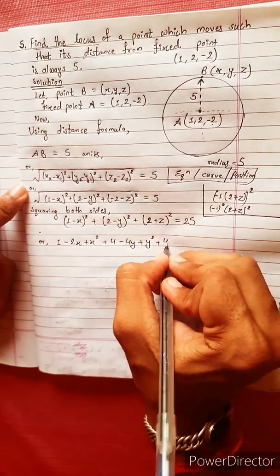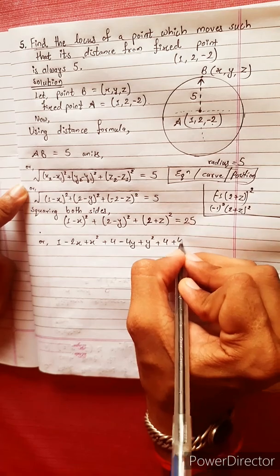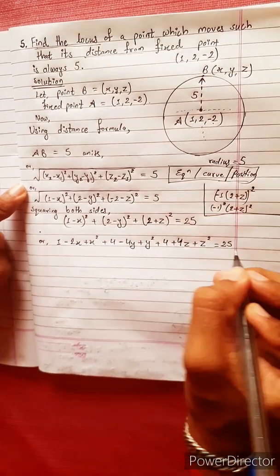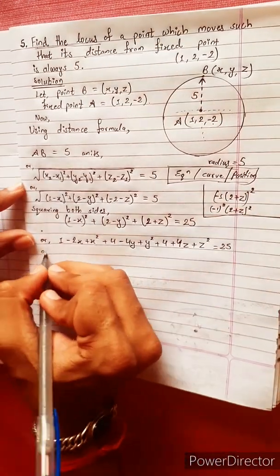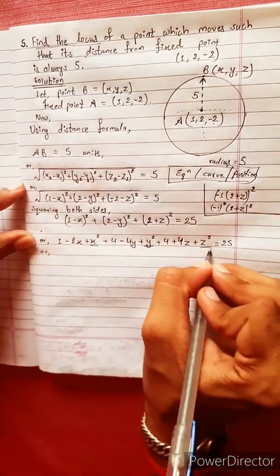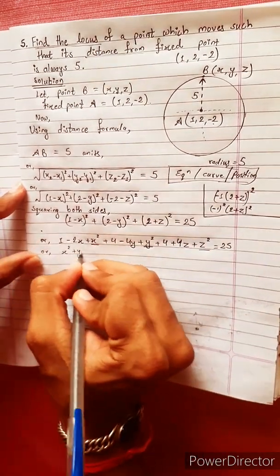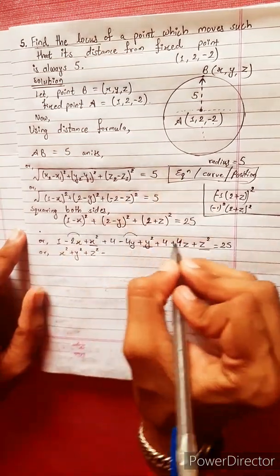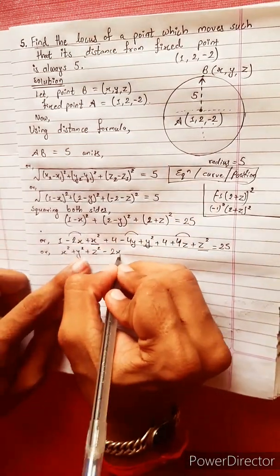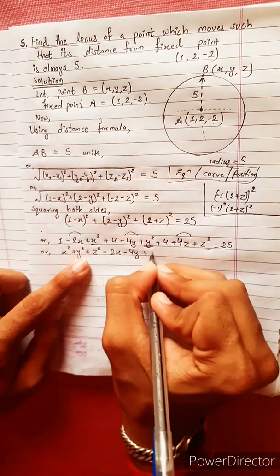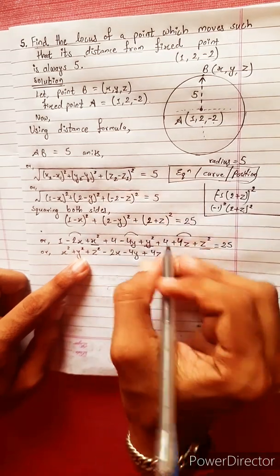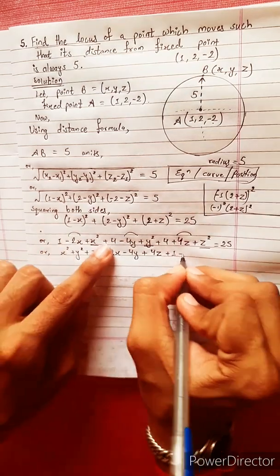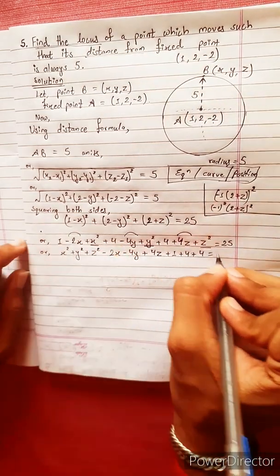Expanding: a² + 2ab + b² equals 25. This gives x² + y² + z² minus 2x minus 4y plus 4z. And 1 plus 4 plus 4 equals 9, which equals 25.